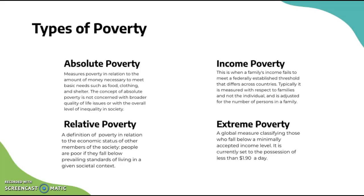Here are the types of poverty. Absolute poverty measures poverty in relation to the amount of money necessary to meet basic needs such as food, clothing, and shelter. The concept of absolute poverty is not concerned with broader quality of life issues or with the overall level of inequality in society.